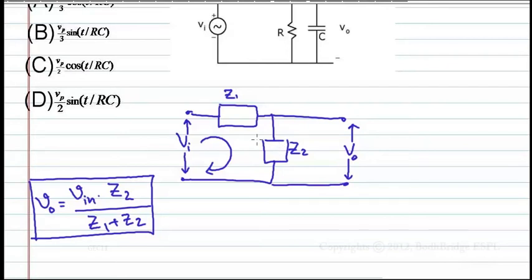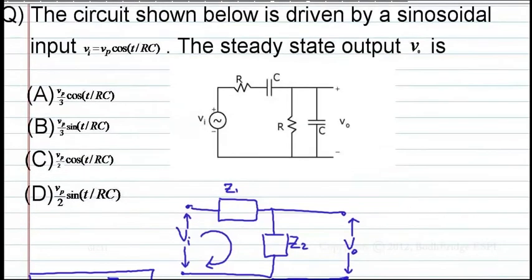What is Z1? What is Z2? We should calculate now. Z1 is nothing but the top one, R plus 1 by j omega C. And Z2 is R into 1 by j omega C, by R plus 1 by j omega C.